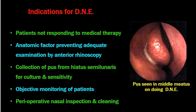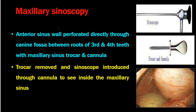On endoscopic view of the right nasal cavity, pus in the middle meatus signifies sinusitis. In maxillary sinoscopy, the anterior wall is perforated directly through the canine fossa between roots of the third and fourth teeth using a maxillary sinus trocar and cannula. The trocar is removed and sinoscope is introduced through the cannula to visualize inside the maxillary sinus — though this is not commonly performed nowadays. DNE is currently the number one diagnostic test.